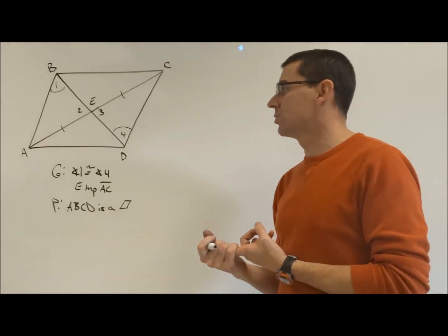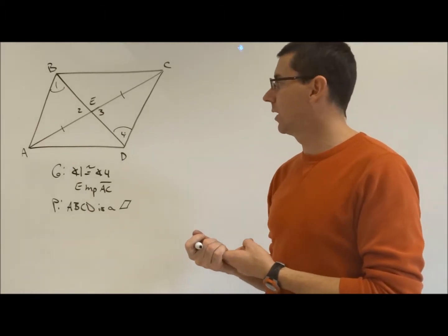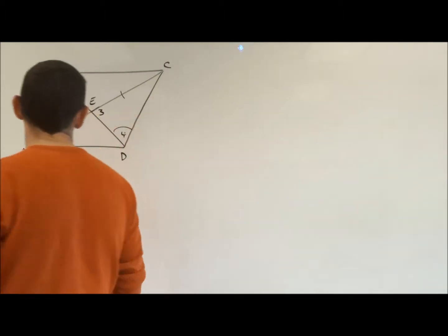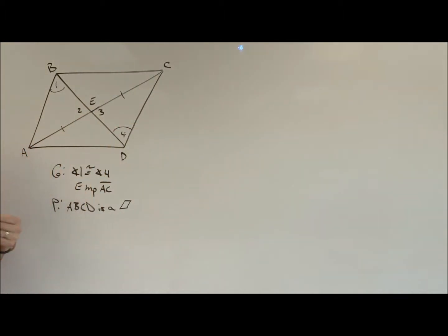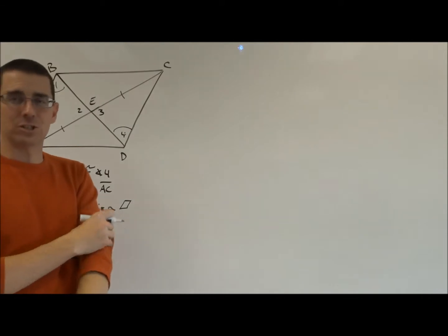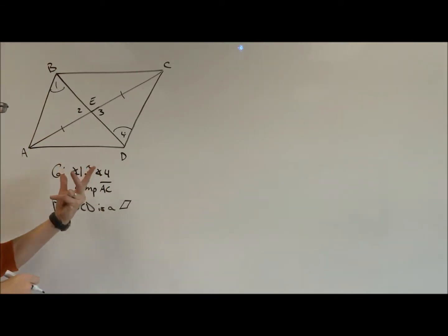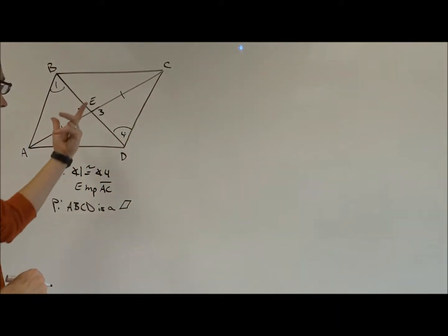Is it going to be angle side angle? Or is it going to be angle angle side? In this case, I can't get another side, right? After we exhaust the given, the only way to get an additional side usually is if we used a reflexive property, if they had a shared side, which they don't in this case.